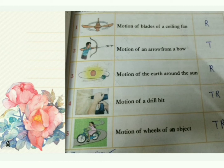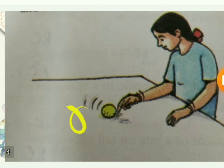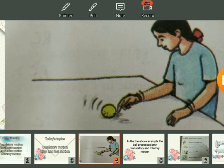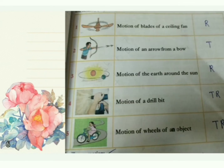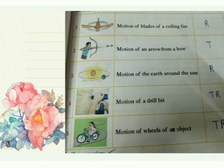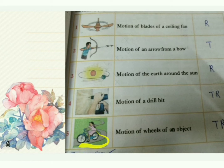A point-like structure at the end of the drill enters straight into the wall while rotating at the same time. So this is an example of both translatory and rotatory motion — labeled TR. Similarly, motion of wheels of a vehicle: the wheel rotates (rotatory) while the vehicle moves along a road (translatory). That is why it is also labeled TR. Complete these examples in your textbook.